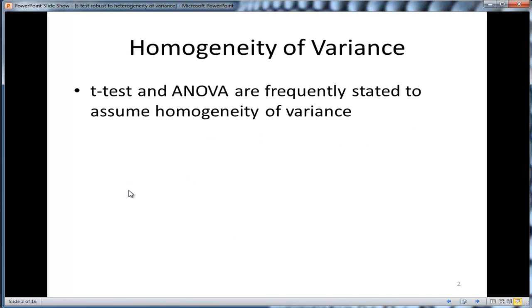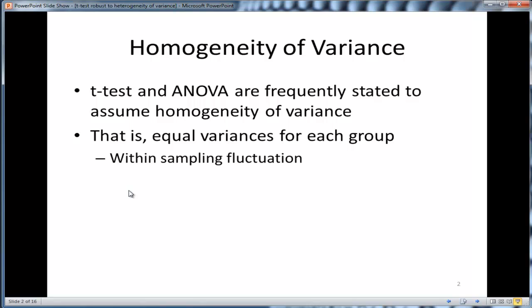Homogeneity of variance is frequently stated as an assumption associated with the t-test and ANOVA. Homogeneity of variance means that the variances associated with each group are equal to each other within sampling fluctuations. You wouldn't expect them to be exactly the same numerically. We use tests like Levene's F-test or, quite rarely, the F-max test, which is an old test, to test the hypothesis that variances are equal.